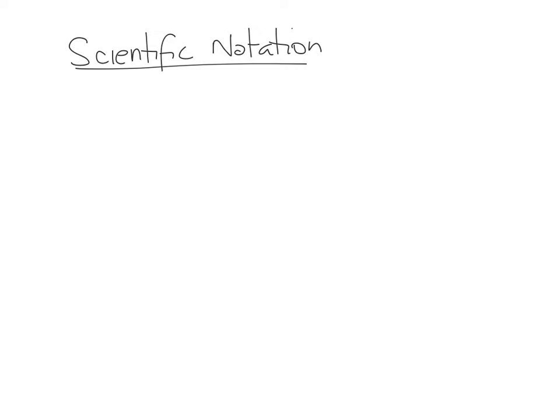Scientists work with some very large and some very small numbers, so we need a simpler way to write these numbers — we use scientific notation. The long form is called standard notation; for example, 1500 would be standard notation. In scientific notation, you have a number A times 10 to the exponent N.